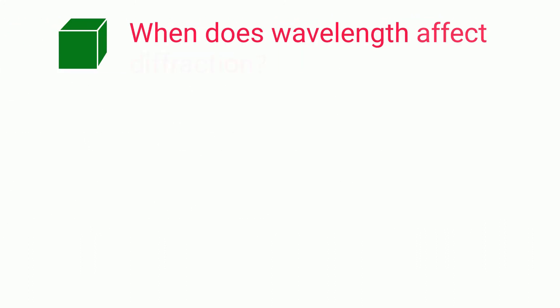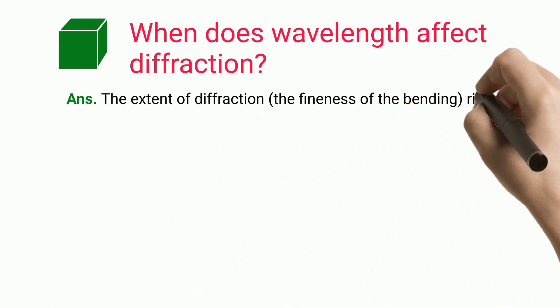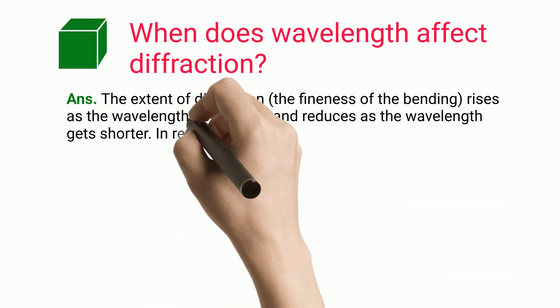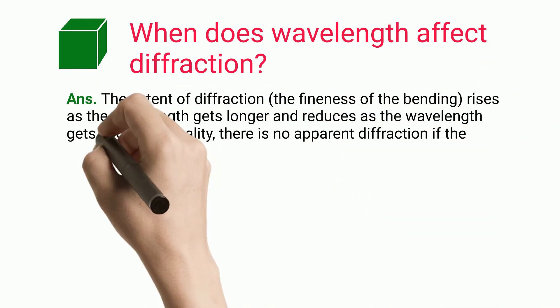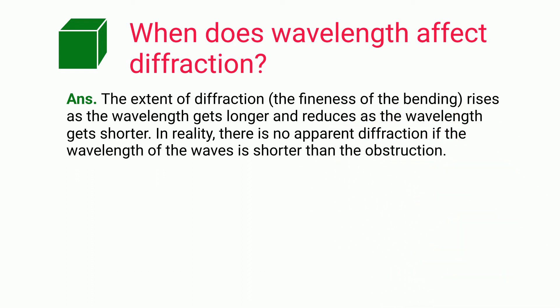When does wavelength affect diffraction? The extent of diffraction, the fineness of the bending, rises as the wavelength gets longer and reduces as the wavelength gets shorter. In reality, there is no apparent diffraction if the wavelength of the waves is shorter than the obstruction.